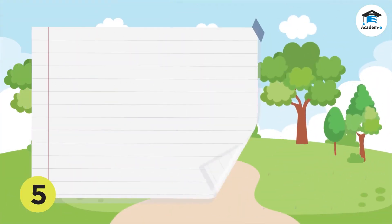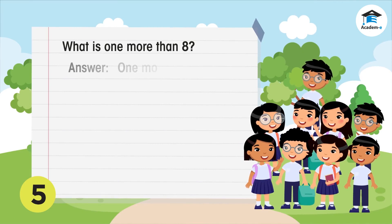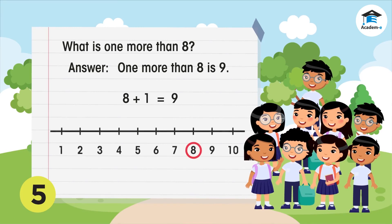Let's do this example. What is one more than eight? One more than eight is nine. Eight plus one equals nine. On the number line, starting at eight, one step to the right is nine.